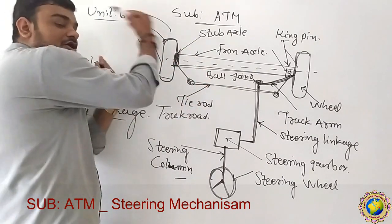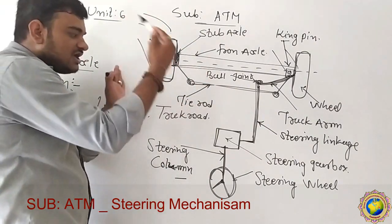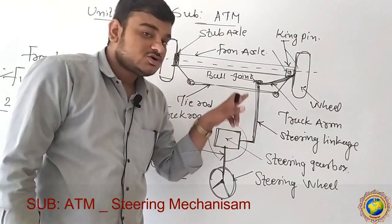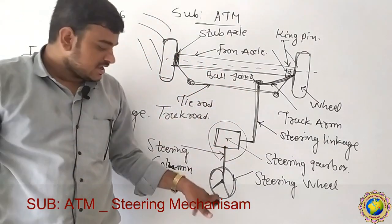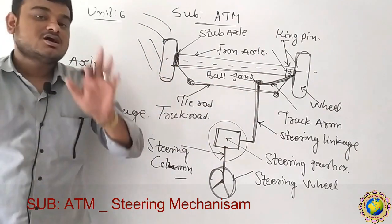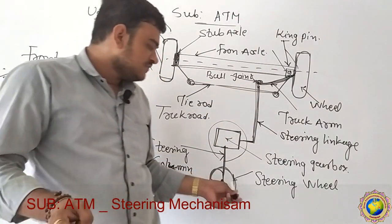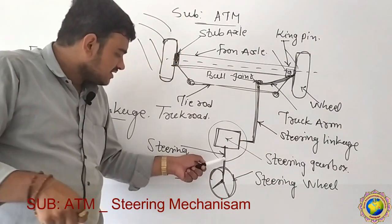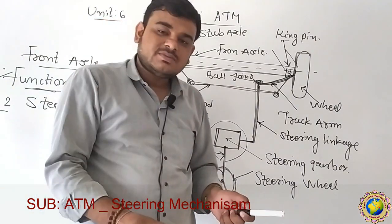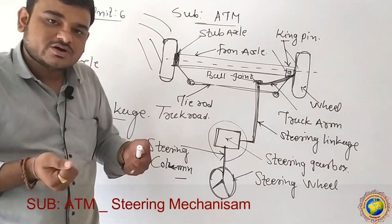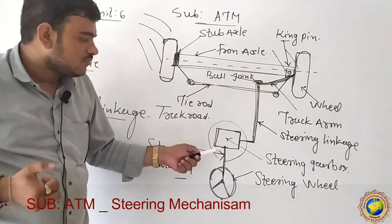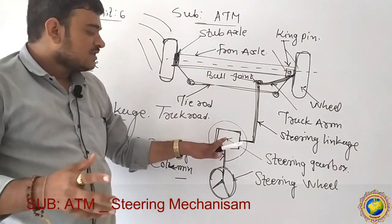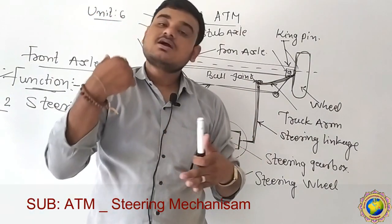The steering wheel rotates and that rotary motion is converted to angular motion by the steering gearbox. The steering gearbox is the most important part of the steering mechanism — it converts rotary motion to angular motion. The steering wheel rotates the steering column, the steering column transfers the torque to the steering gearbox, and the steering gearbox converts the motion and transfers it through the steering linkage to steer the vehicle.